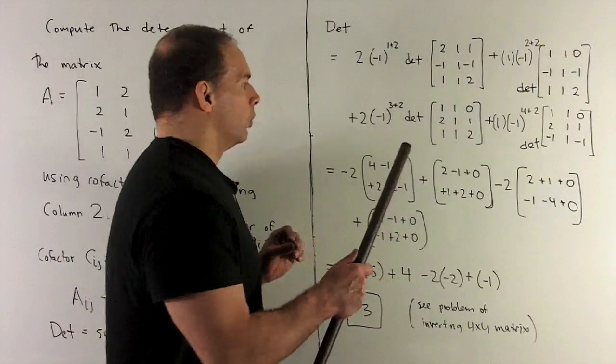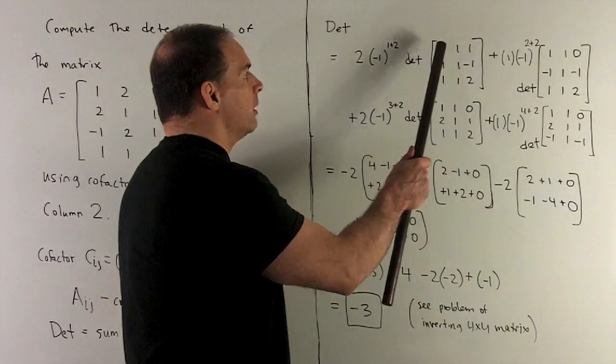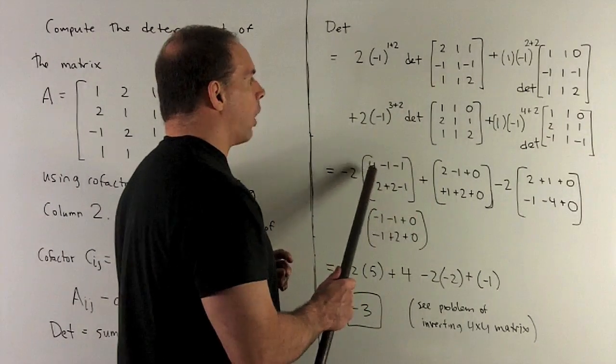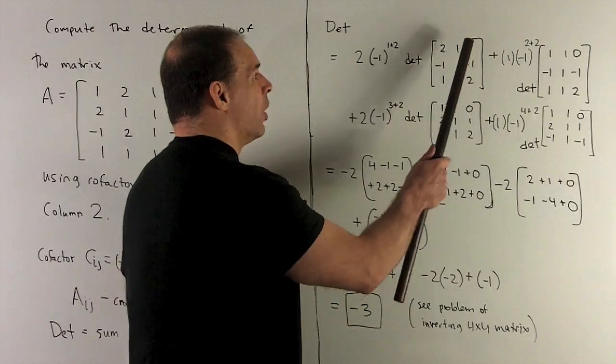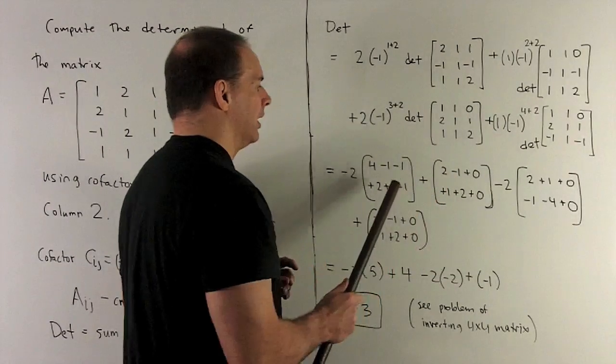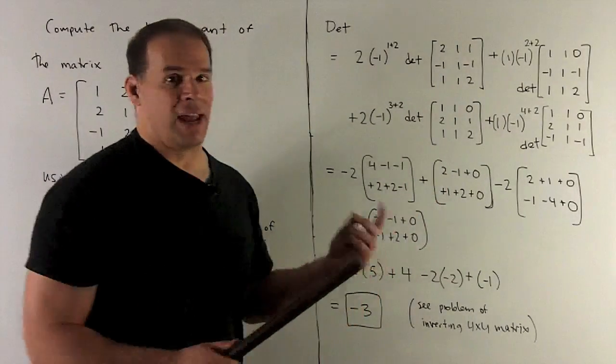In this case, what do we get? For our first one, 2 times 1 times 2 gives me a 4. 1 times minus 1 times 1 gives me a minus 1. 1 times minus 1 times 1 gives me a minus 1. And then, I go in the other direction.